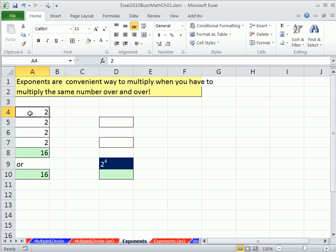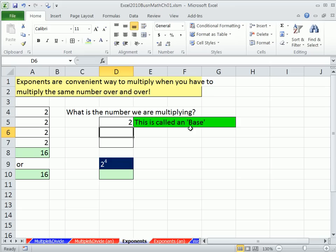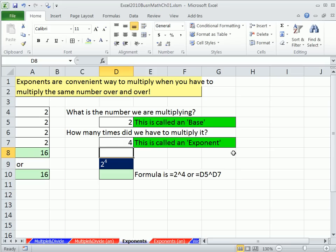There's a word for the two, and there's a word for how many times it's repeated. What is the number we are multiplying? For us, it's two. This is called the base. How many times did we multiply it? Four times. This is called the exponent.